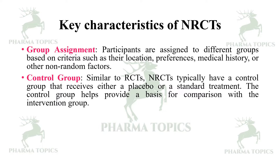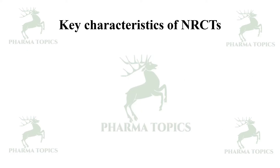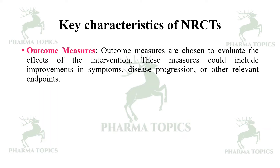The control group helps provide a basis for comparison with the intervention group. Blinding may be single or double; blinding involves masking either the participants, researchers, or both from knowing which group each participant belongs to — it reduces bias. Outcome measures are chosen to evaluate the effects of the intervention.